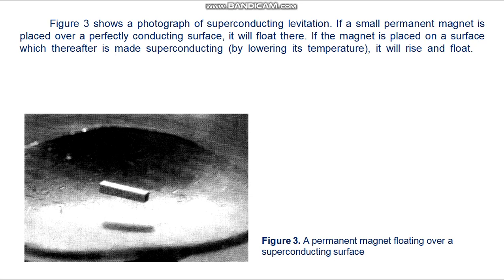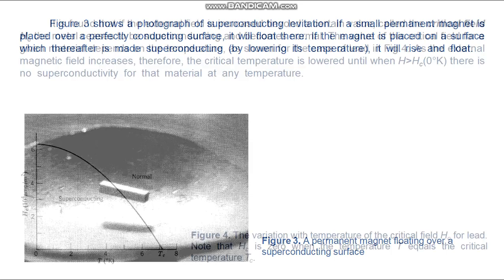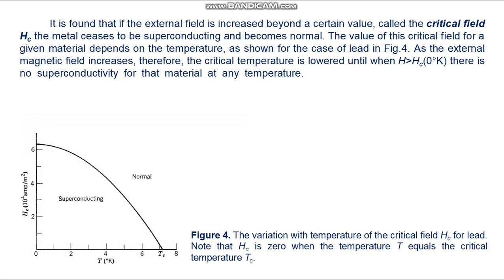Serious engineering studies have indicated the feasibility of using this phenomenon to provide very smooth support for high-speed passenger trains. It is found that if the external field is increased beyond a certain value called the critical field H_c, the metal ceases to be superconducting and becomes normal.